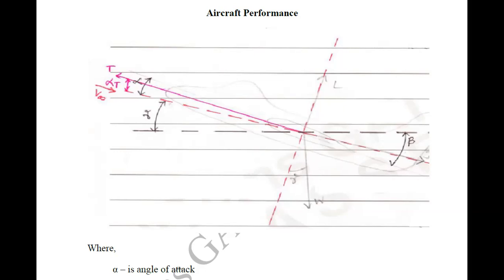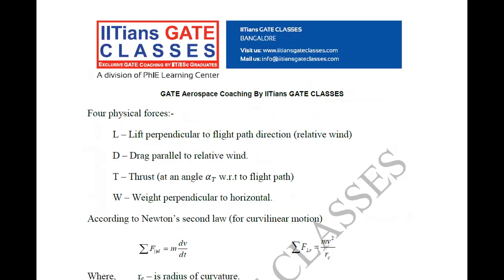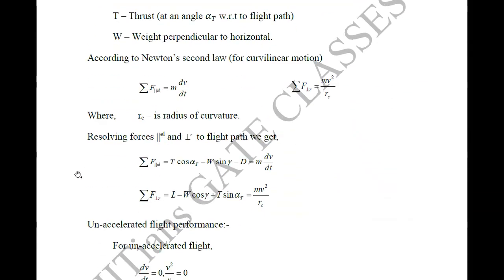According to Newton's second law, if we resolve our forces parallel to the free-stream velocity, the summation of forces acting parallel to the free-stream velocity equals mass into acceleration, that is mass into dV/dt. And if we resolve forces perpendicular to the free-stream velocity, the summation equals mass into centripetal acceleration, that is m times V-squared by R_c, where R_c is the radius of curvature.